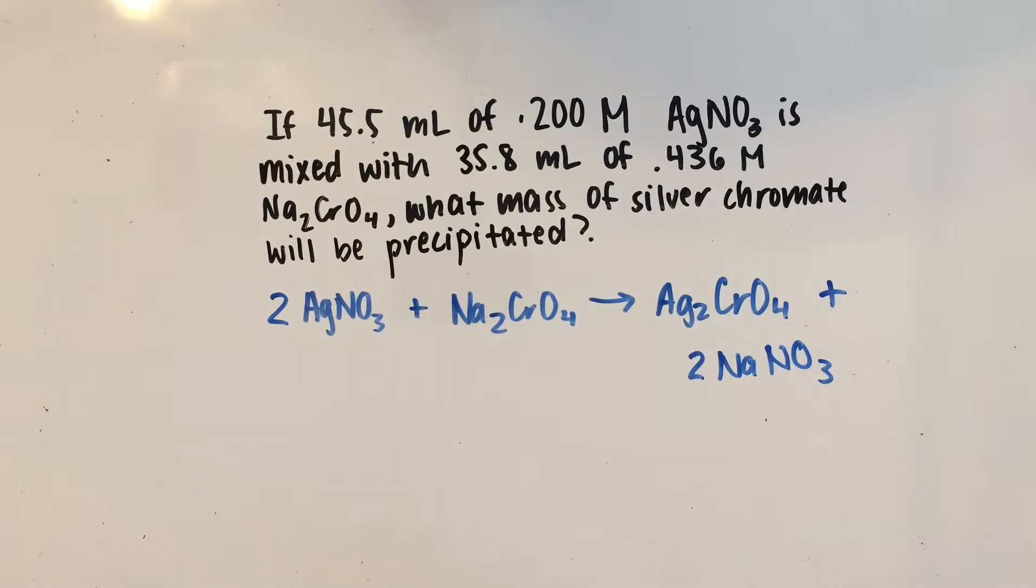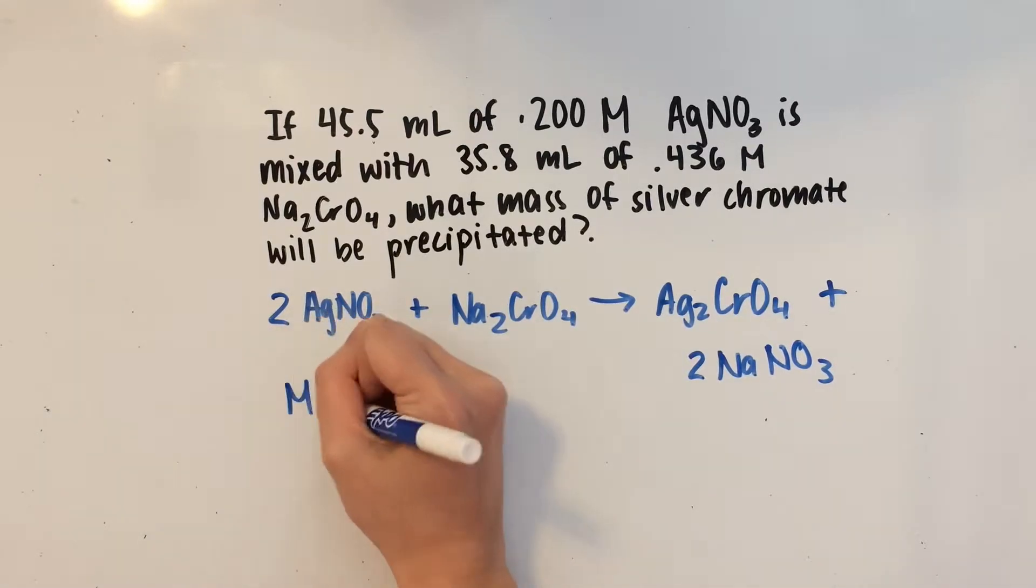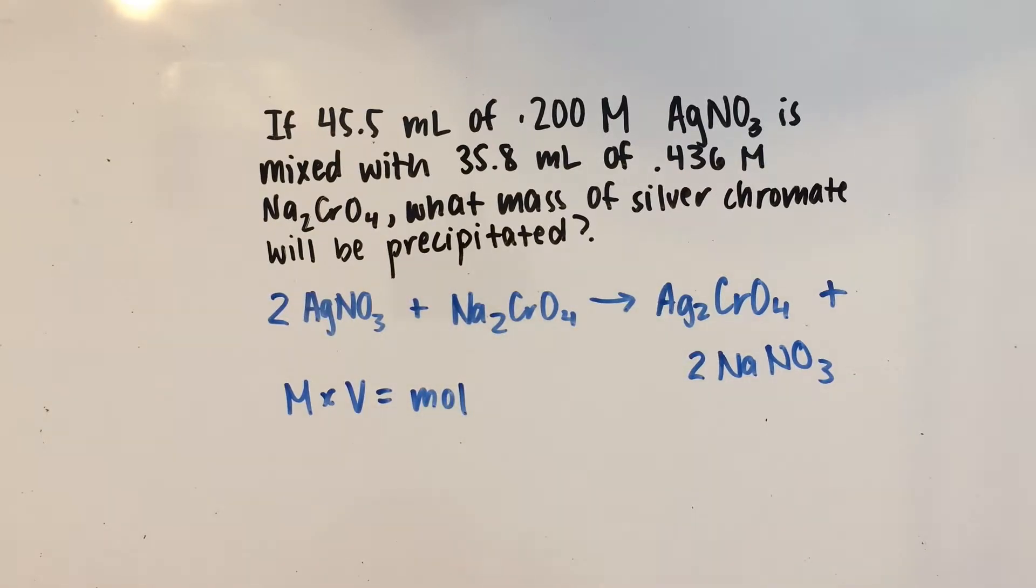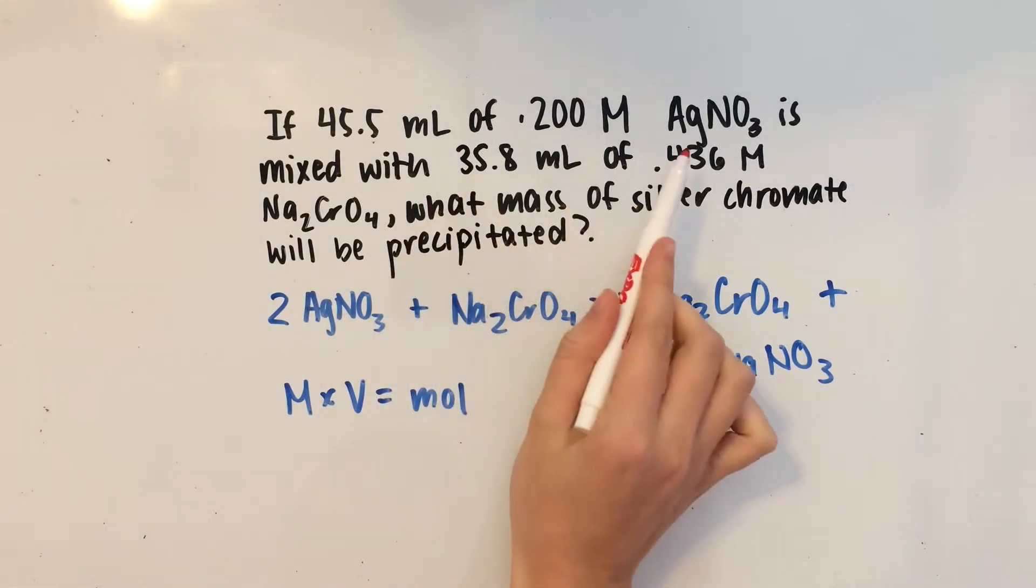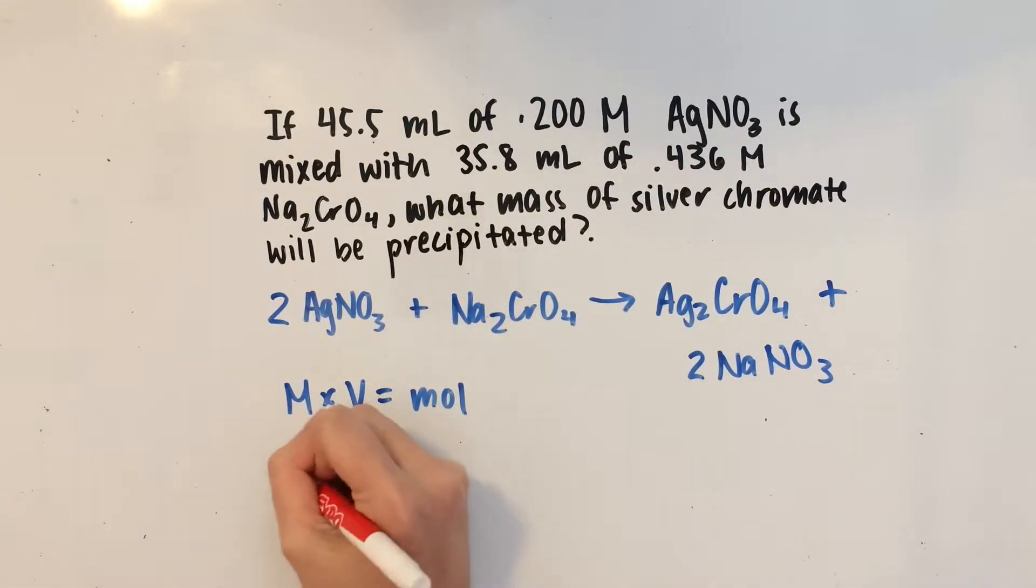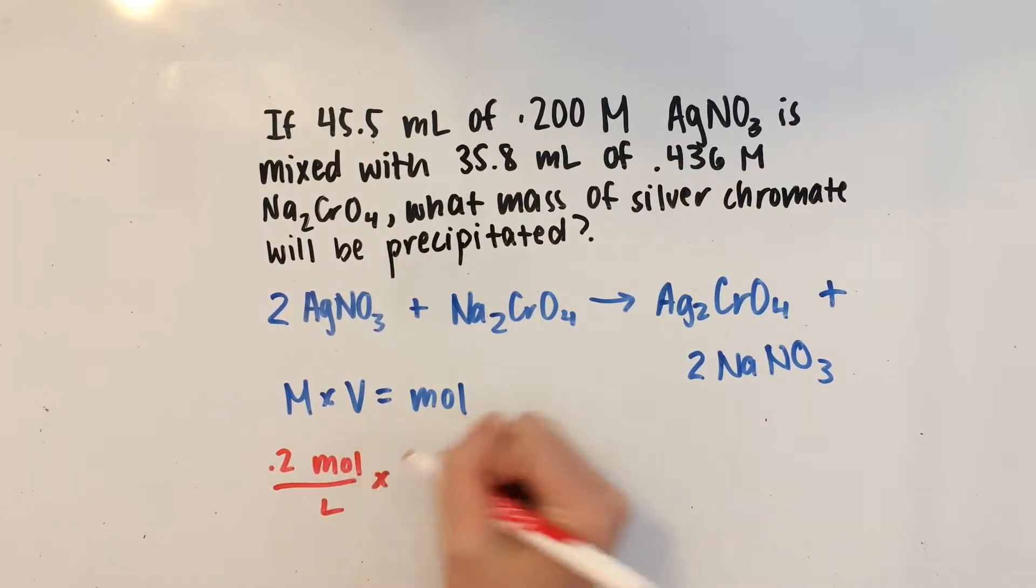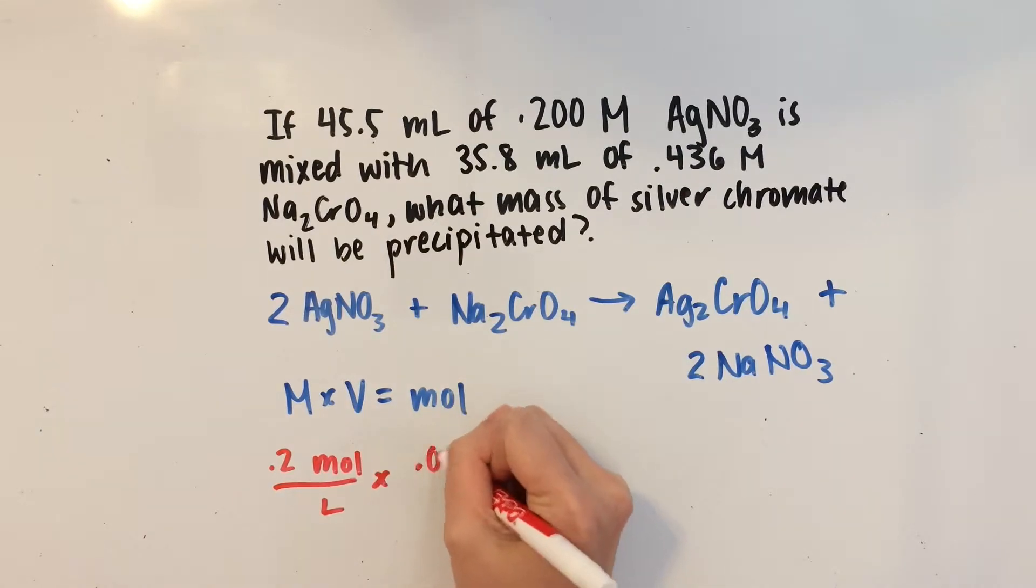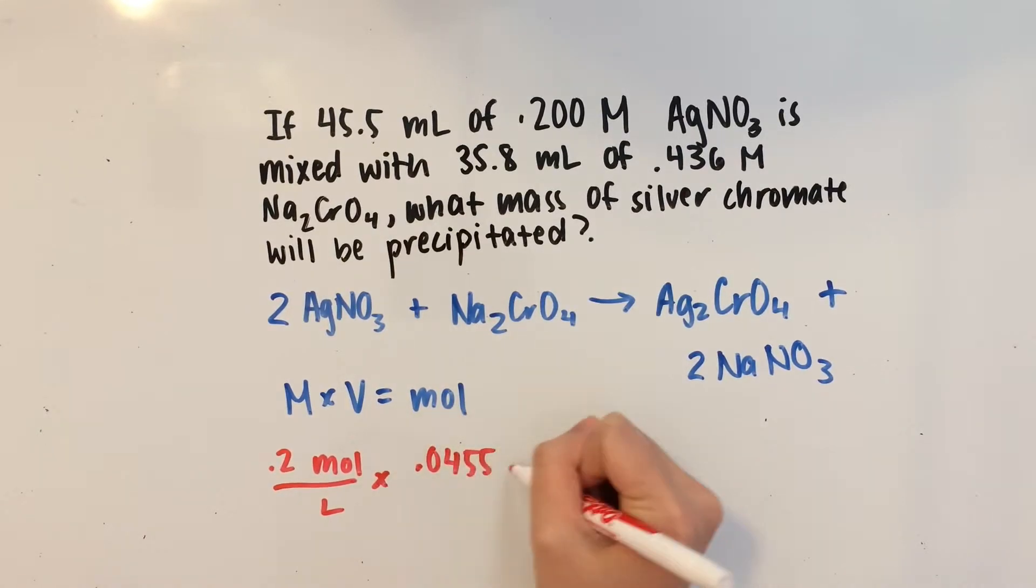Now, I'm going to use the formula M times V equals moles to find out how many moles we have of each reactant. So let's do that. We have the molarity of AgNO3, which is 0.2 molar. And we're going to multiply that by the volume, which is 0.0455 liters.